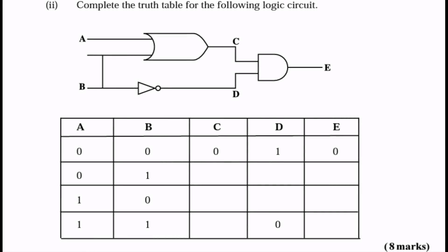In the second part of this question, we're given a logical circuit made up of various gates and a partial truth table in which we're asked to complete the missing portions. To answer this question, you have to first understand what gates are in this circuit. From our diagram, you should know that this is an OR gate. This triangle one here is a NOT gate, and the last one here is an AND gate.